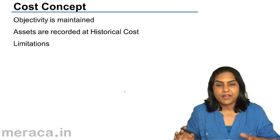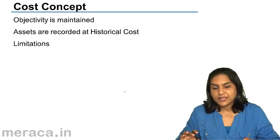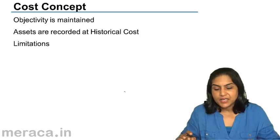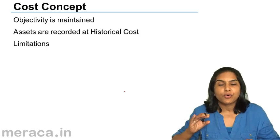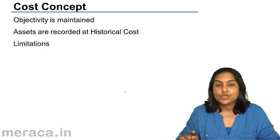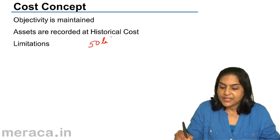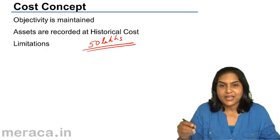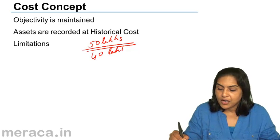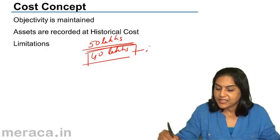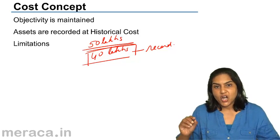Let us say if this business is going to buy a plot of land — the worth of the plot of land is around 50 lakhs. But it so happens that the particular person selling it to us is in need of cash immediately and we are the only people who can give him cash immediately. So he offers it to us at 40 lakhs. The general price of this land in this area is 50 lakhs, but he is giving it to us for 40 lakhs. We buy it for 40 lakhs and record it in the books at 40 lakhs — the actual cost at which it is bought.